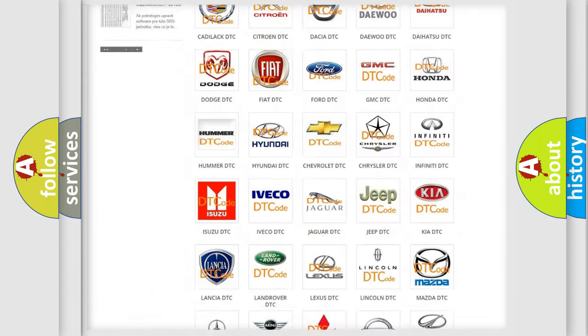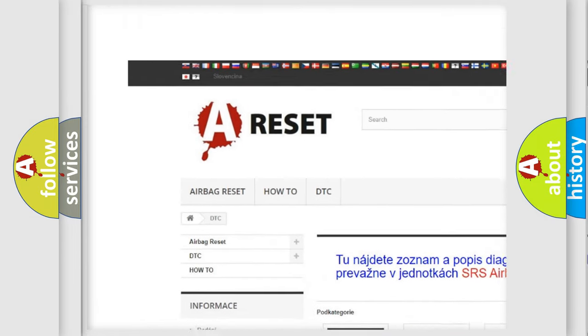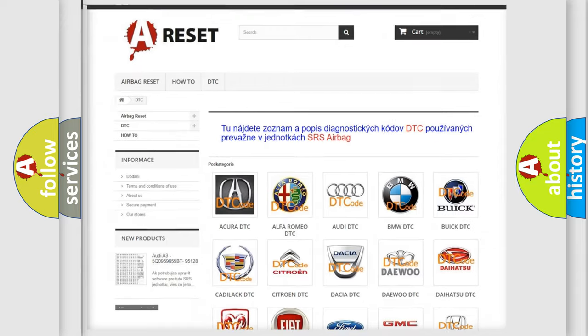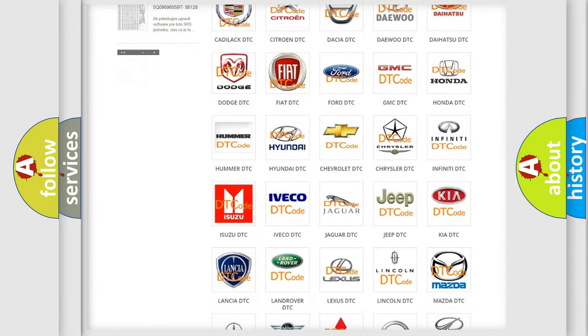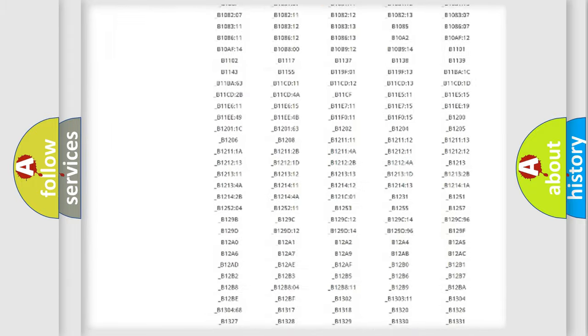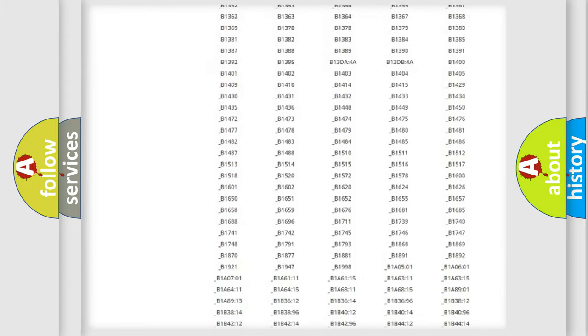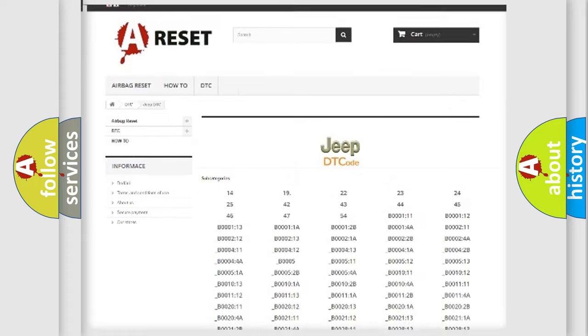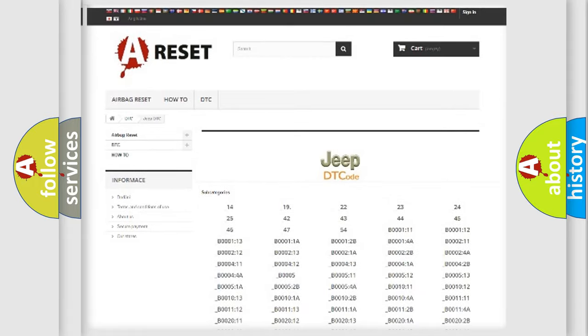Our website airbagreset.sk produces useful videos for you. You do not have to go through the OBD2 protocol anymore to know how to troubleshoot any car breakdown. You will find all the diagnostic codes that can be diagnosed in Jeep vehicles, and many other useful things.